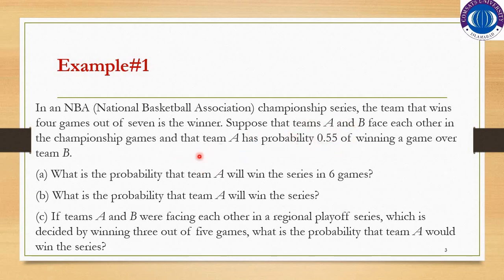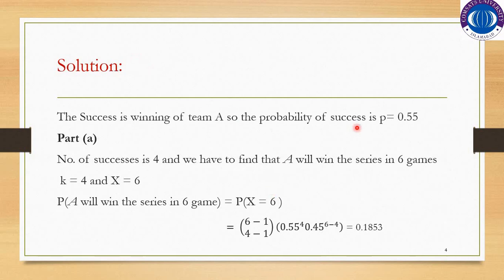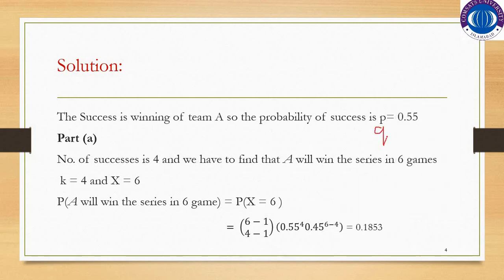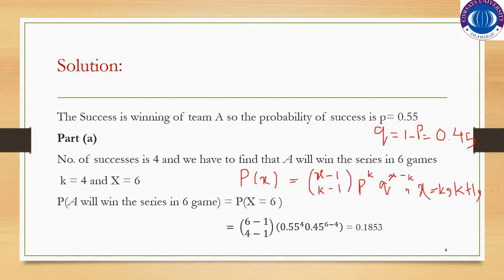The probability of success P is 0.55, which remains constant in each game. Q will be 1 minus P, which equals 0.45. The number of successes K is 4, and we have to find that Team A will win the series.